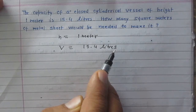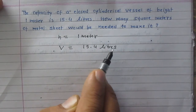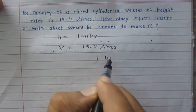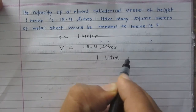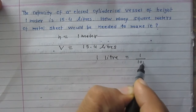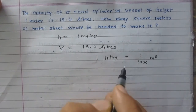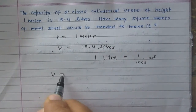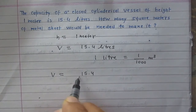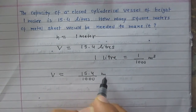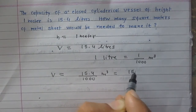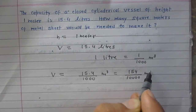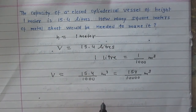Let us convert the unit of volume to meter cube. We know that 1 liter is equal to 1/1000 meter cube. So using this relation, the volume of this cylinder is 15.4 divided by 1000 meter cube, which is 154 divided by 10,000 meter cube.